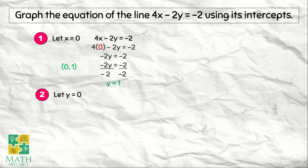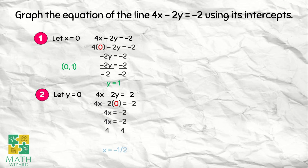Next, we let y equal to 0. So 4x minus 2y is equal to negative 2, and we replace y with 0. It becomes 4x minus 2 times 0 is equal to negative 2. Simplifying, 4x is equal to negative 2. We divide both sides by 4 — whatever the coefficient of x, we divide both sides by that number to isolate x. So x becomes negative 2 over 4, or negative one-half. Our second point is (-1/2, 0).